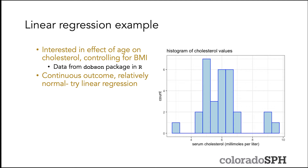Let's look at a brief example using data. We're interested in serum cholesterol as the outcome and want to see how age and BMI affect it. This data comes from the Dobson package in R, which has several datasets included as examples in the Dobson and Barnett textbook. Looking at the data, a histogram of serum cholesterol values shows a continuous numeric variable that is relatively normal — not perfect, but a reasonable candidate for linear regression.